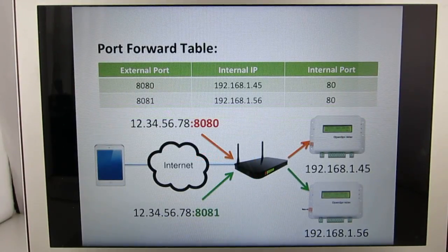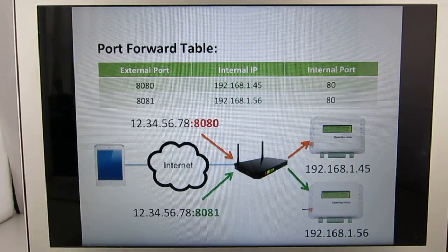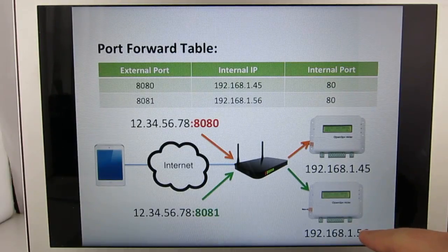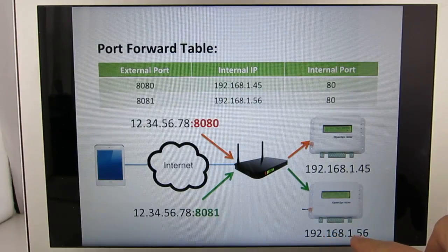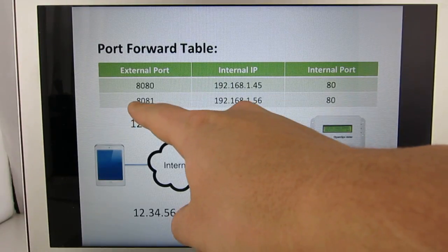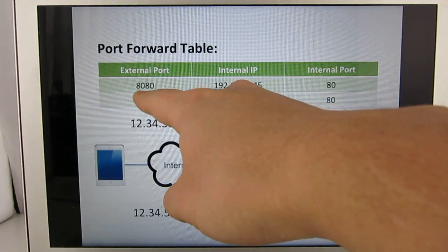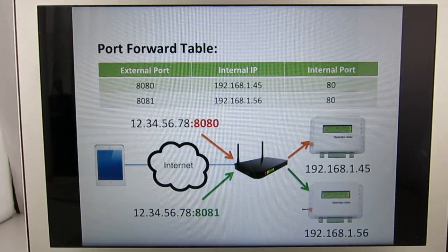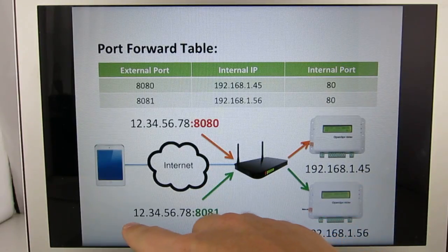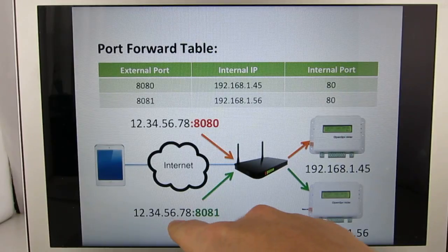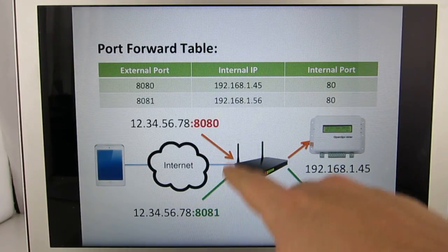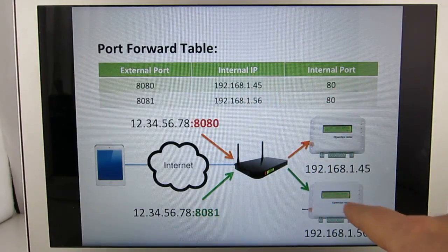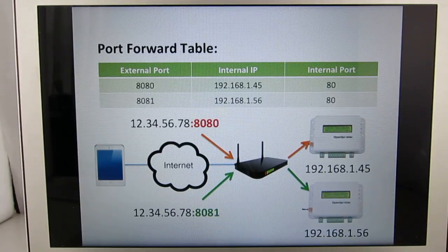If you have multiple OpenSprinklers on the same network, you can define one entry for each OpenSprinkler. Just make sure each one has a different external port number. In this example, I have a second OpenSprinkler at internal IP 192.168.1.56. I set up a second port forwarding entry and gave it the external port 8081. You can choose any number as long as it's unique from the other external ports. When you're outside and request access using the external IP followed by colon 8081, the router will check the table and forward the request to the correct OpenSprinkler.